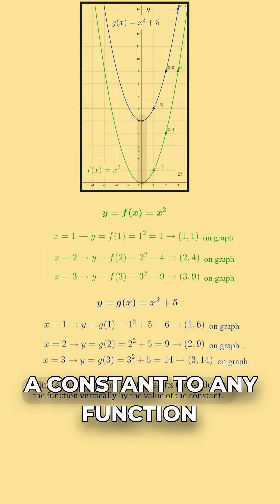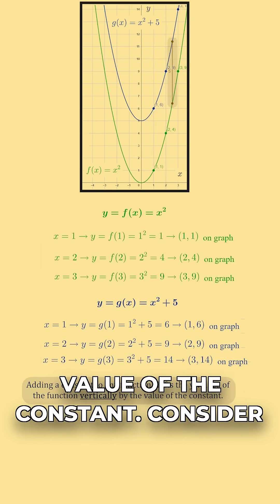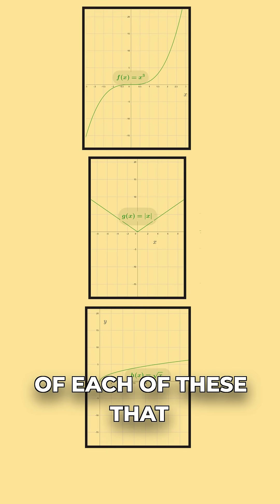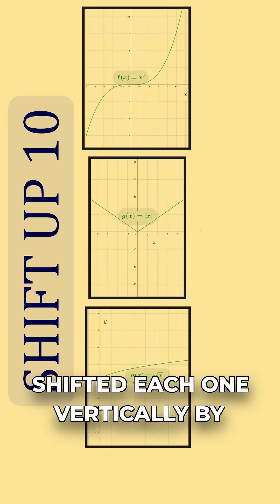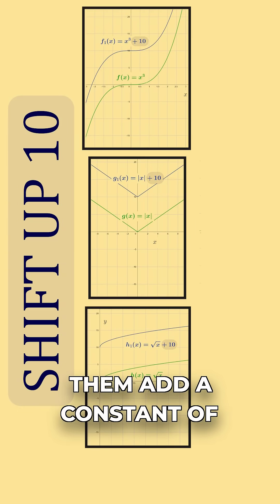Adding a constant to any function shifts the y values of the function vertically by the value of the constant. Consider all of these functions. If I wanted to create functions of each of these that shifted each one vertically by 10 units, I'd create functions that look similar to them but add a constant of 10.